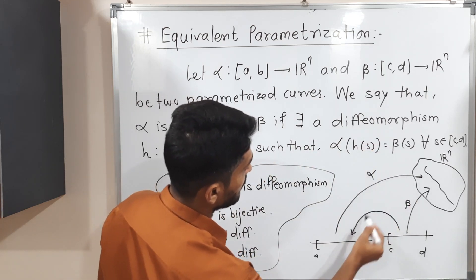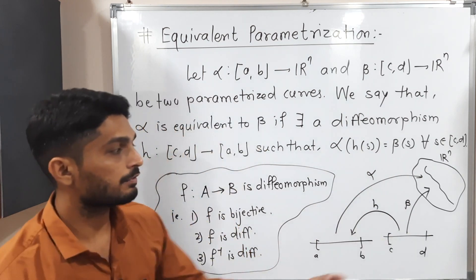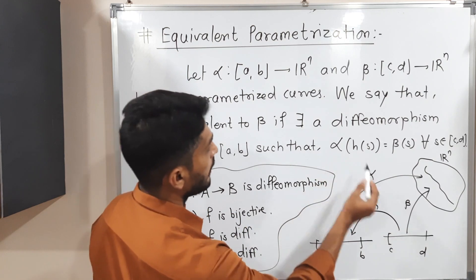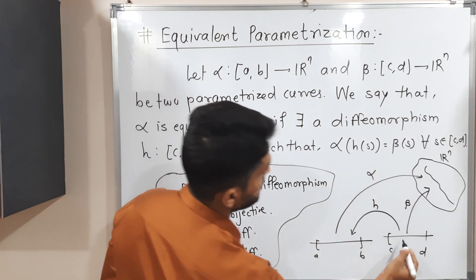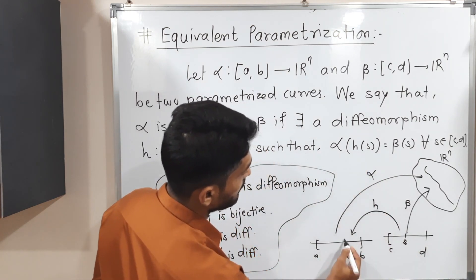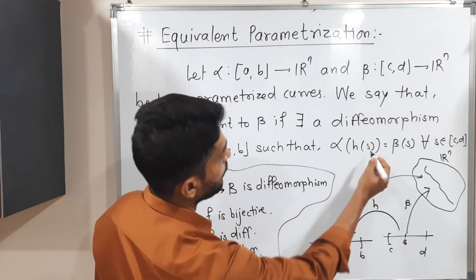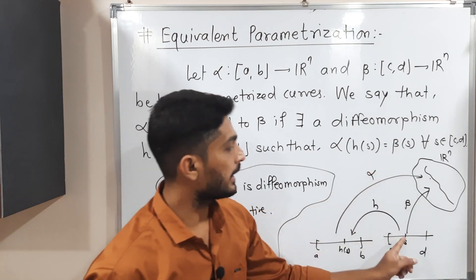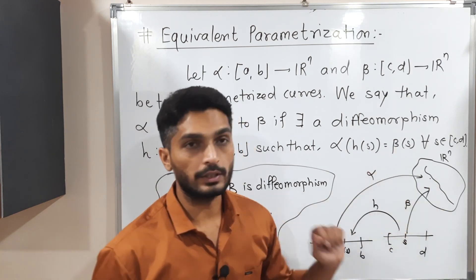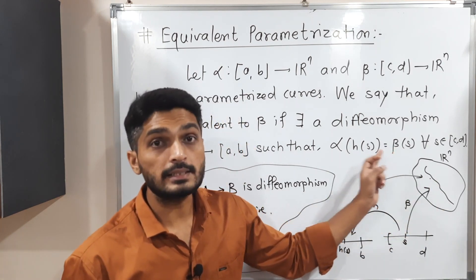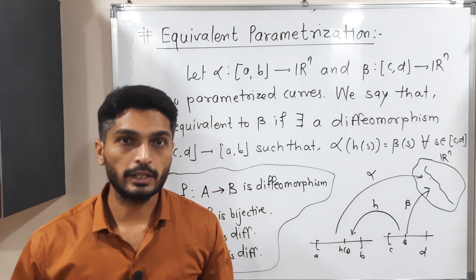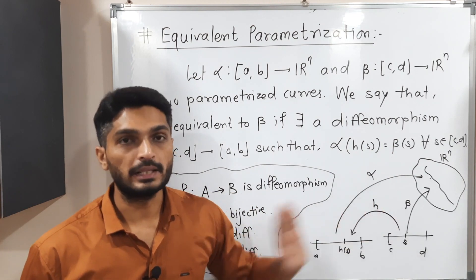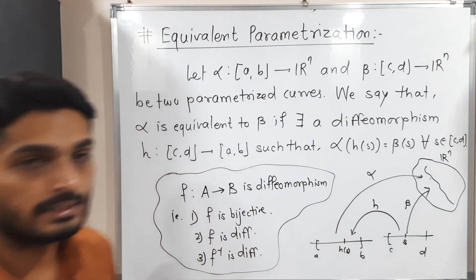So h is defined from [c, d] to [a, b]. Suppose a point s is in [c, d]; operating h on s gives h(s) in [a, b], and then operating alpha gives a point in R^n. Operating beta directly on s also gives that same point in R^n. This means beta is the composition of alpha and h. Then we say alpha is equivalent to beta.